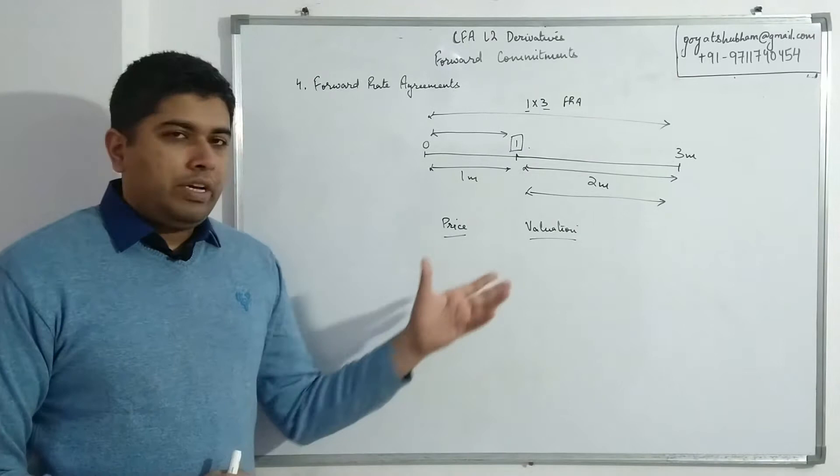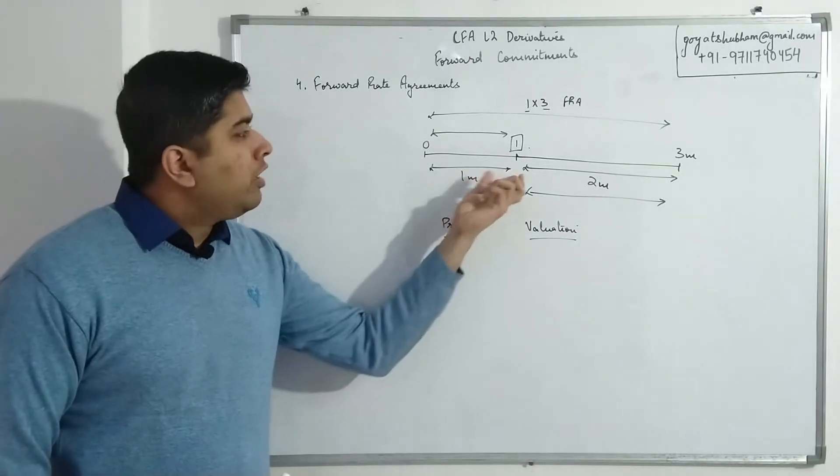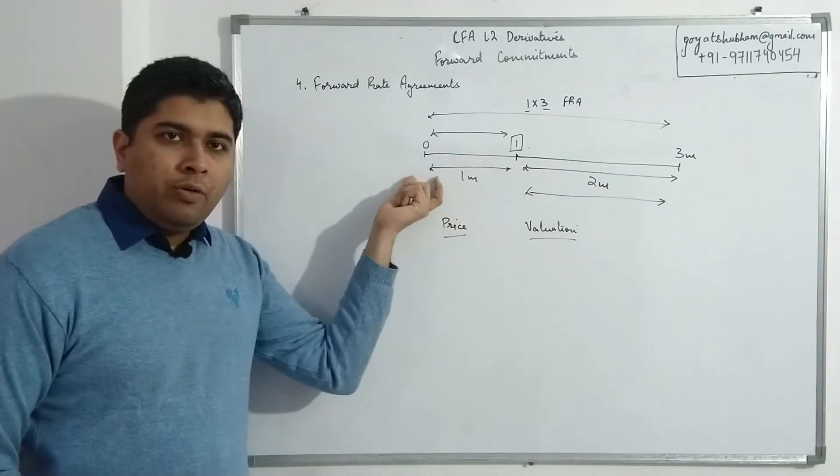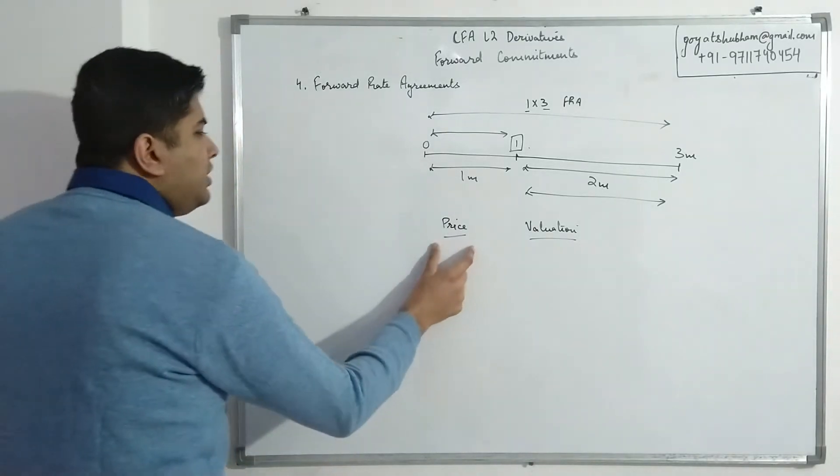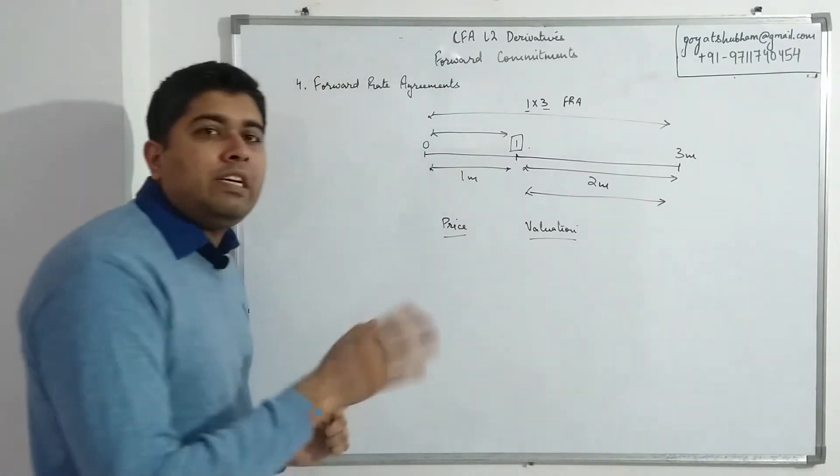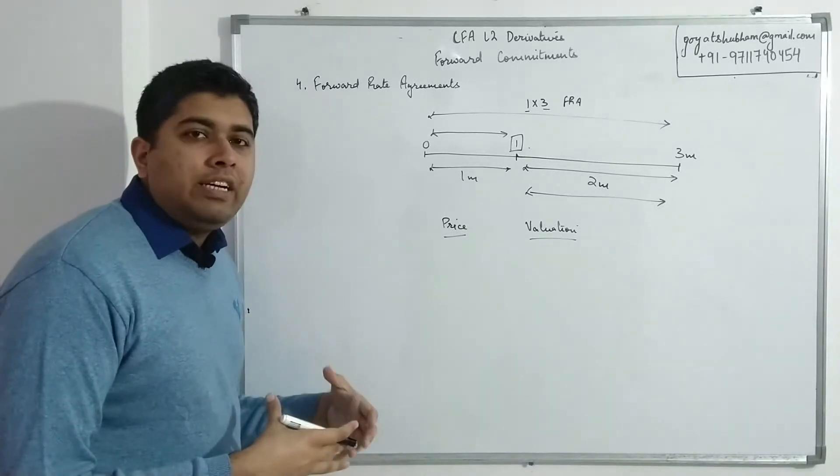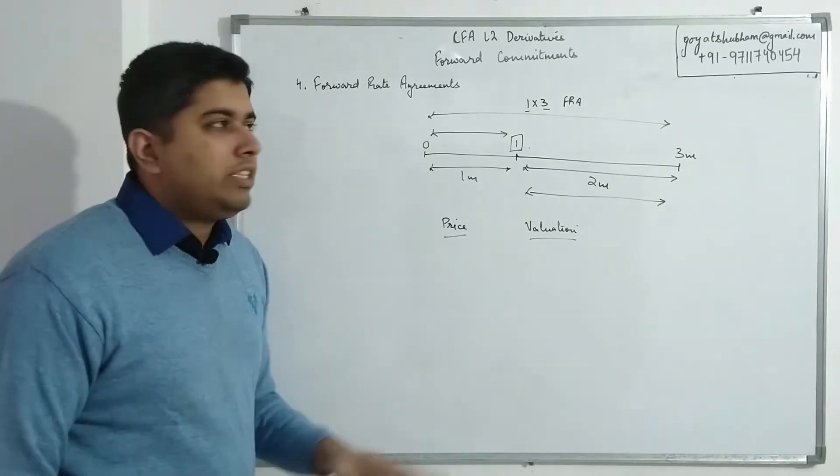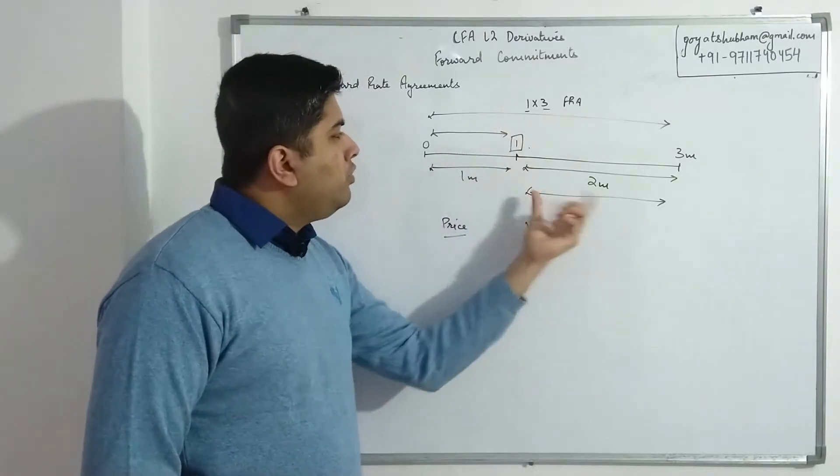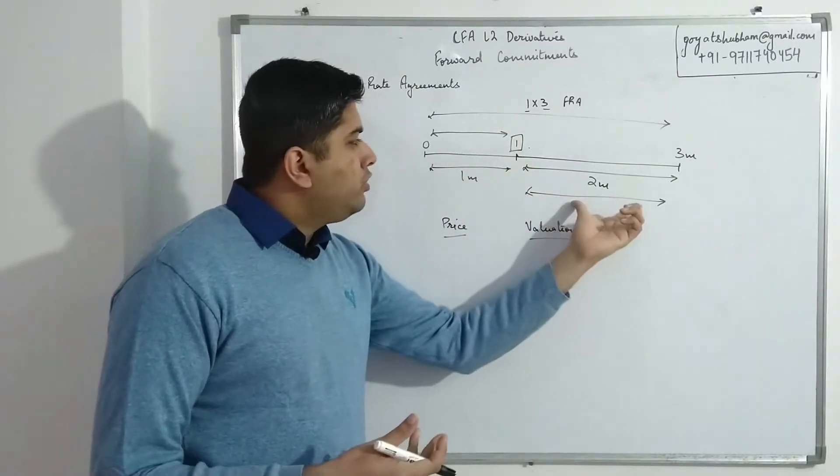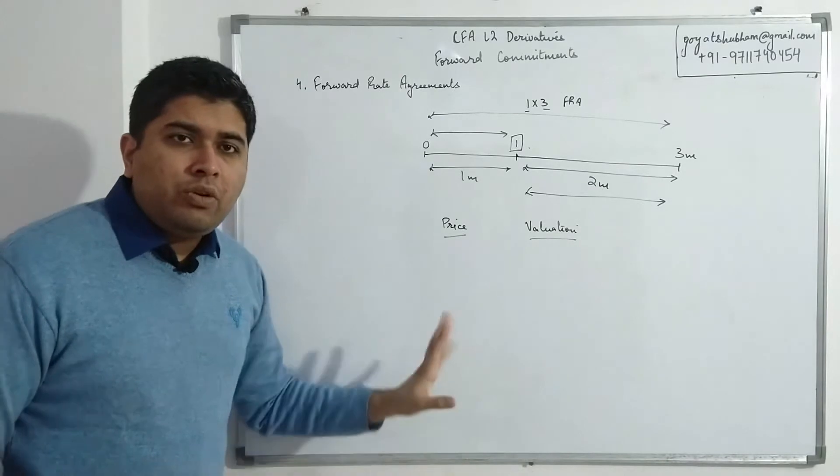Now, price of an FRA simply means the interest rate that you want to be fixed. So I want to take a loan after one month, but I want the interest rate to be fixed right now. That fixed interest rate is what we call price of an FRA. As such, calculation of this fixed rate is not very drastically different from how we calculated the forward rates. Remember in fixed income, in the first reading itself, we had calculations of forward rates. That is the exact logic that we'll be following here to calculate the price. So you will be given the rate for one month, you will be given the rate for three months. You just have to calculate the rate that should be applicable for this two-month period. That is how we calculate the price of FRA. Don't worry, we'll do an example for all of these to have further clarity.